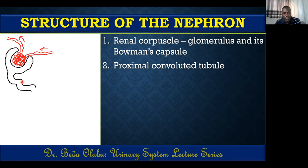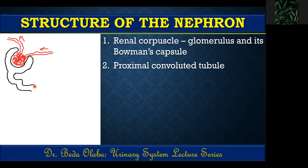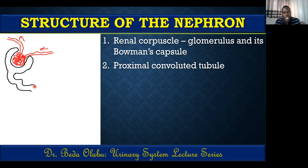The key role of the PCT is tubular reabsorption — absorption of useful substances back into the body. For that reason, the proximal convoluted tubule has several microvilli to increase surface area for tubular reabsorption.